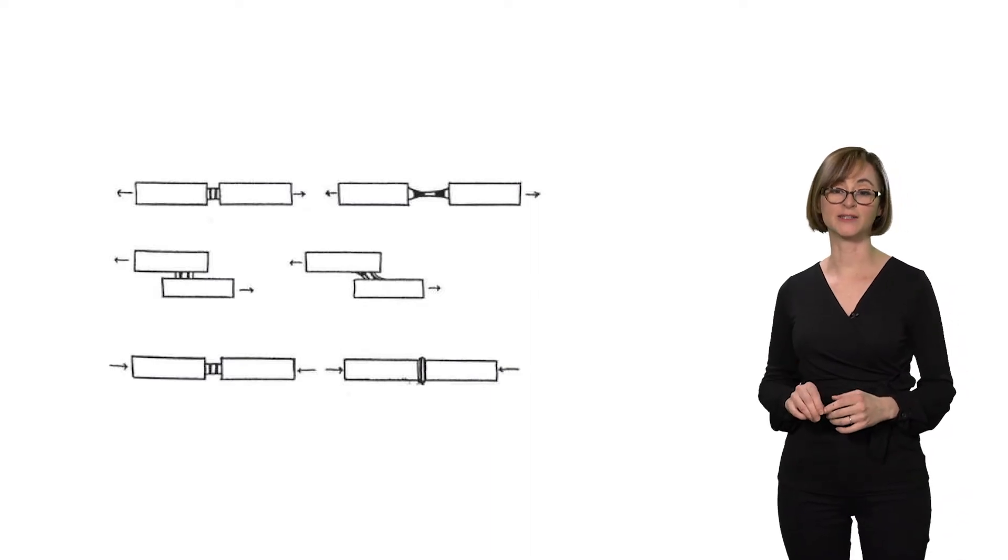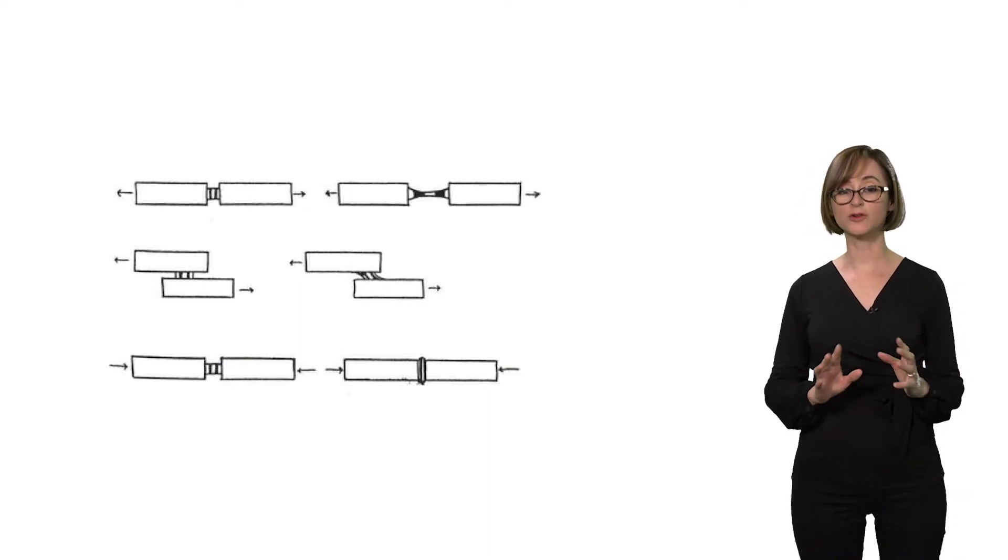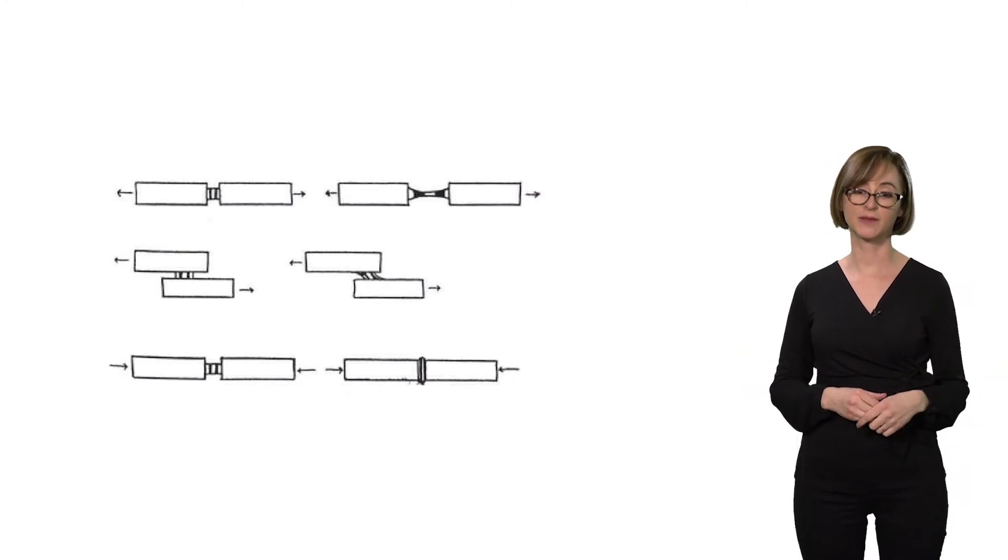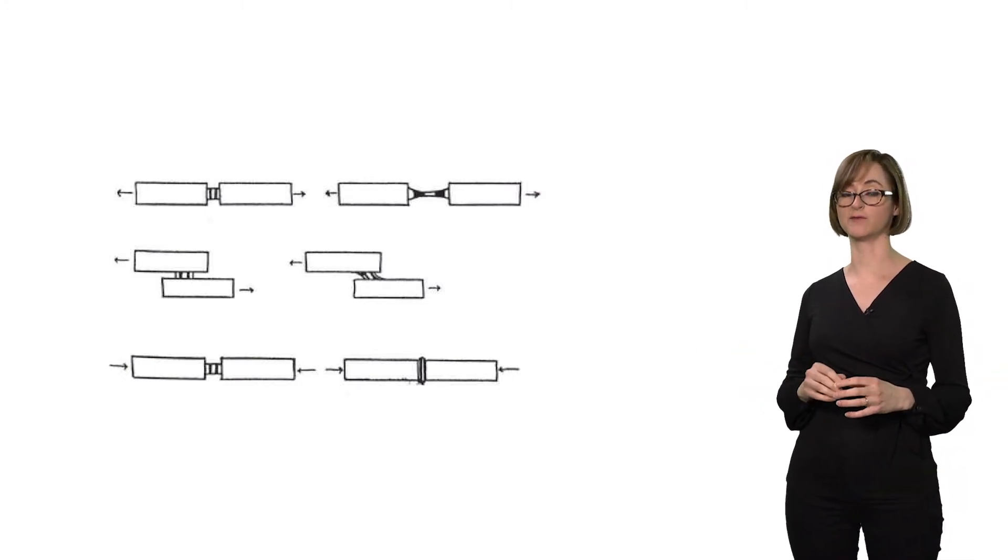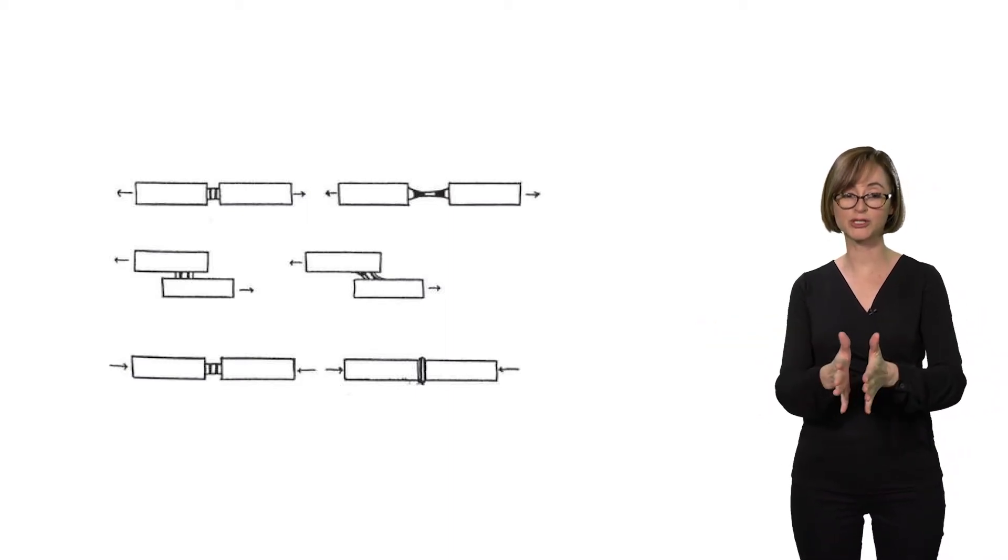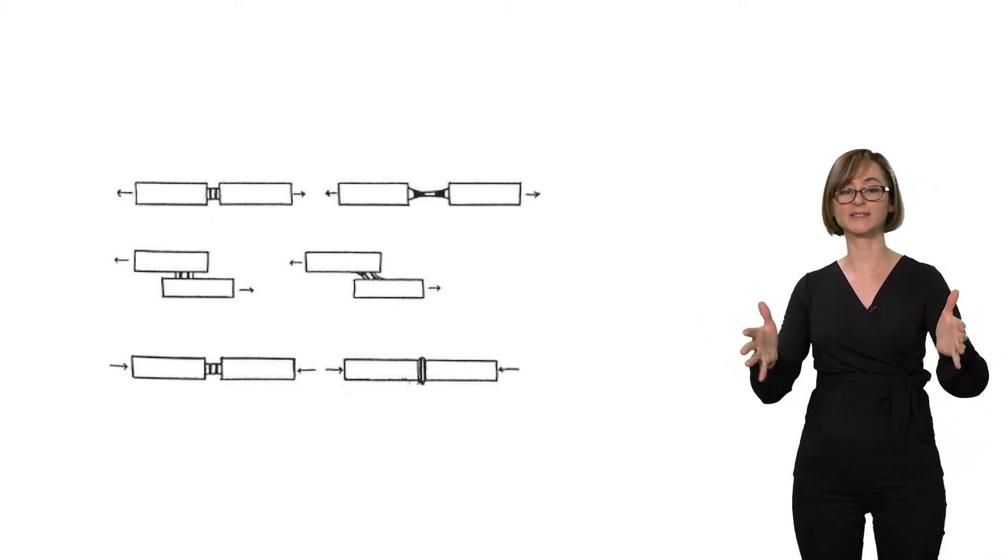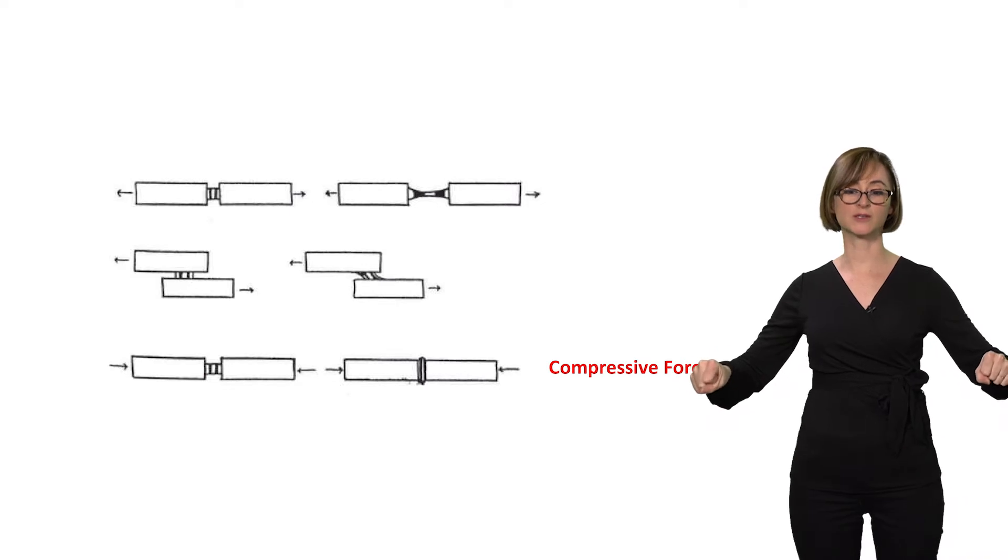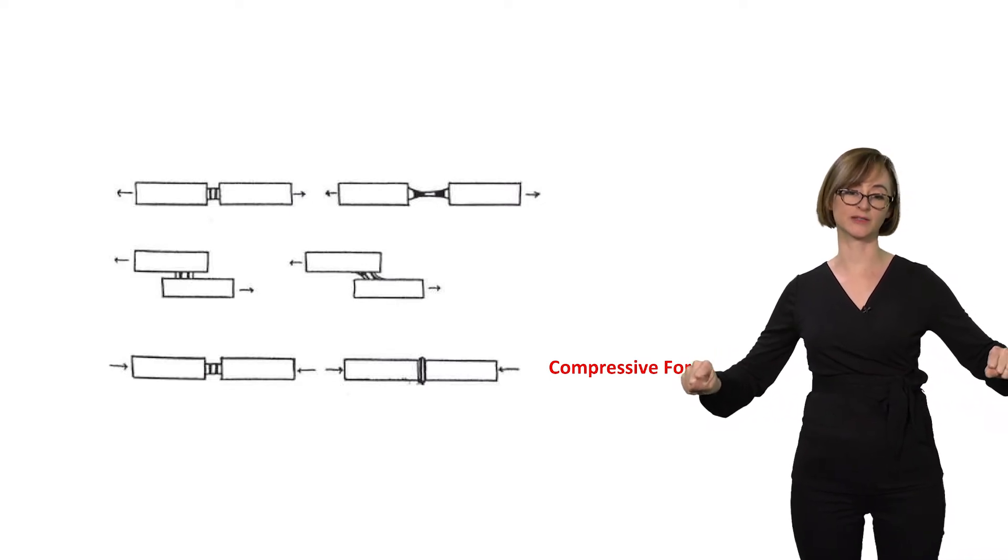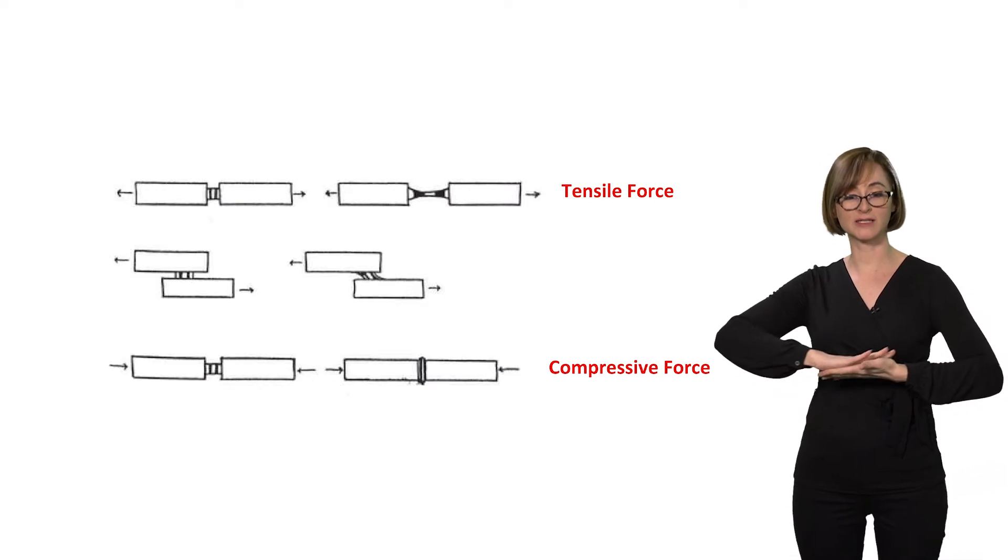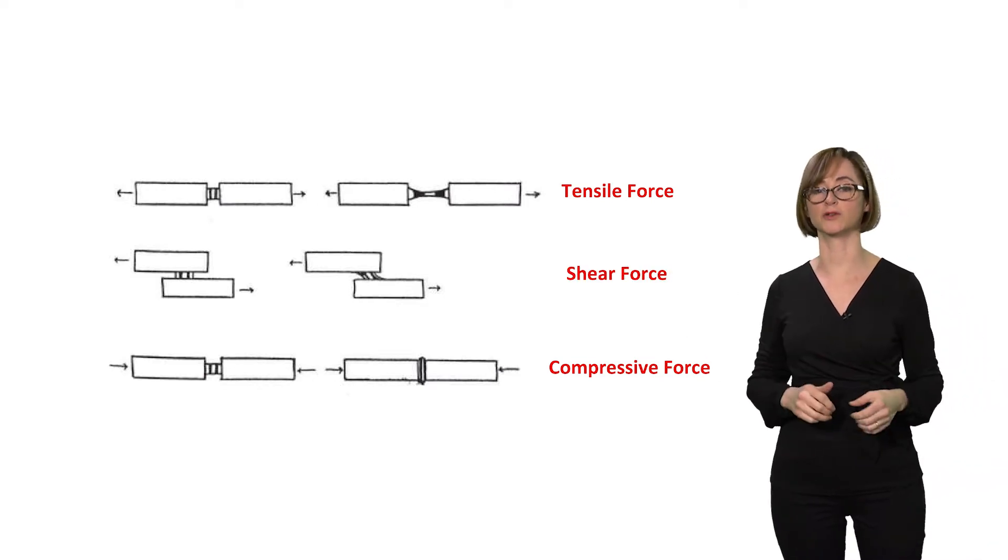Force has both a magnitude and a direction. It can be a stronger force or a weaker force, and it can be directed in many different directions. We're going to talk about three directions of force. The direction of force that you may have in mind already is the kind that pushes two things together or pushes against opposite sides of a thing. This is called compressive force. Force that pulls things away from each other or stretches something is called tensile force. Force that rubs two surfaces against each other is called shear force.